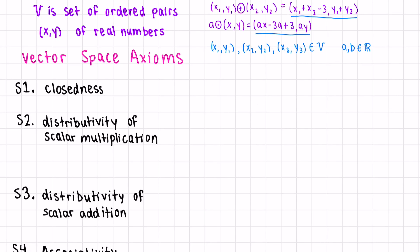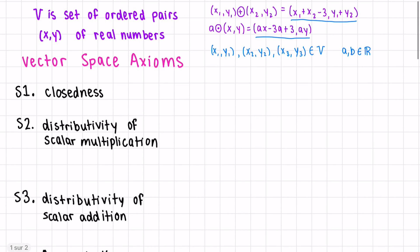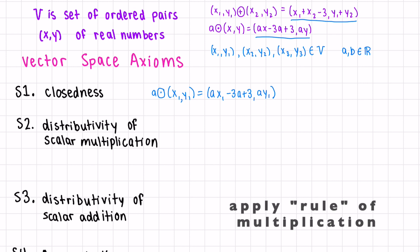Next, let's check the scalar multiplication axioms, beginning with closure. If we multiply (x1, y1) by a scalar a, what do we get? We get another element of our set V.